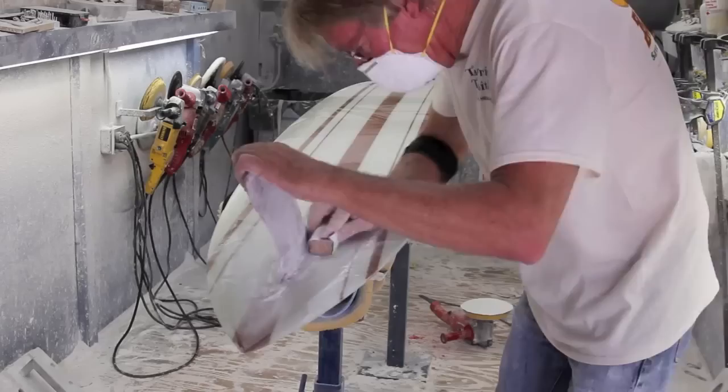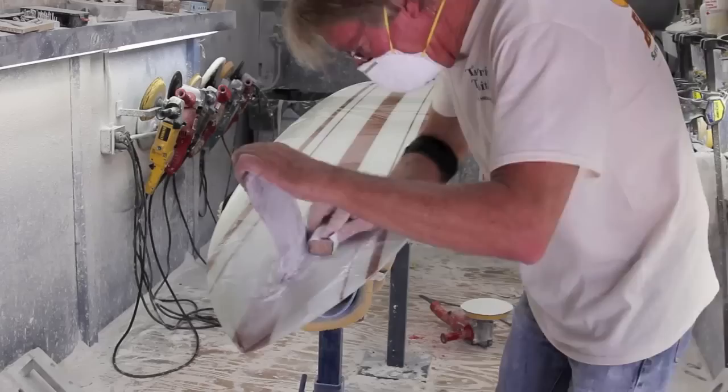Then after hot coating you sand the board and I always start with the fin and get it tuned up first. Back here where the concave and the bevels are I'll start with the machine but then I do a lot of hand sanding at the end. For the final touch your hands work great.